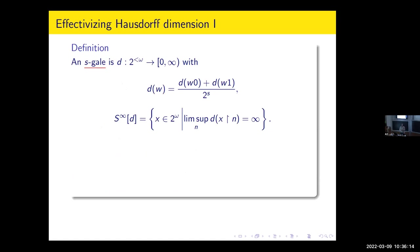When we effectivize dimension, we basically have two ways of doing so. The first one has to do with gambling. We are in Cantor space, we want to talk about points, and we use this generalization of martingales which are called S-gales. They represent some betting game on which we bet knowing finite prefixes of our point. A martingale is a one-gale; this is just a generalization.